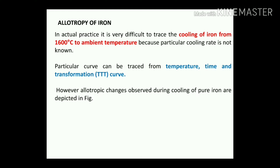Before discussing the heat treatment process chart, some introduction about the allotropy of iron. In actual practice it is very difficult to trace the cooling of iron from 1600 degrees centigrade to ambient temperatures because the particular cooling rate is not known. The cooling can be traced from temperature, time, and transformation, represented as TTT curves. The allotropy changes observed during the cooling of pure iron are shown in the figure.